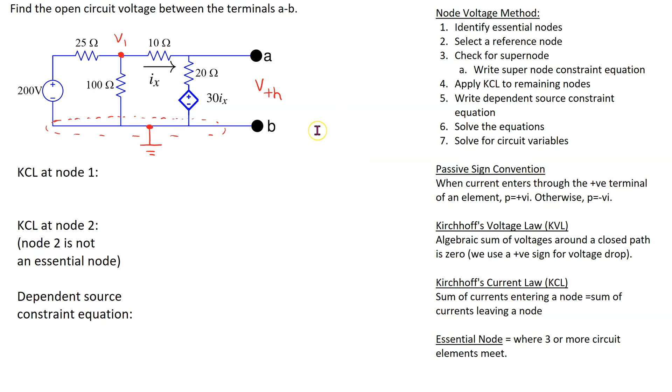In this video we will look at a technique that is often useful when node voltage method is used to find the open circuit voltage between a given terminals of interest. Consider this given circuit. The open circuit voltage between terminals A and B is V Thevenin. This is the voltage of interest that we need to solve for.